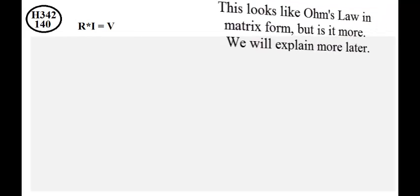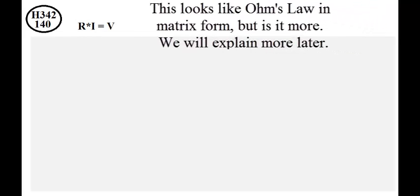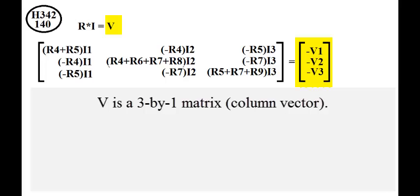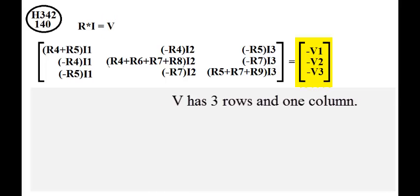This looks like Ohm's Law in matrix form, but it's more. We'll explain more later. V is a 3 by 1 matrix, or a column vector. V has three rows and one column: row 1, row 2, row 3.